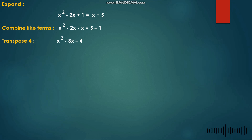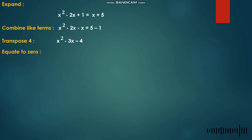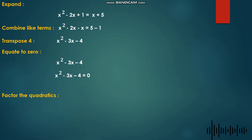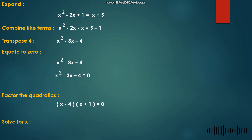Combining further: negative 2x minus x gives negative 3x, and 5 minus 1 gives 4. Transposing 4 makes it negative 4, so we equate to zero: x² − 3x − 4 = 0. Factoring the quadratic gives (x − 4)(x + 1) = 0. Solving for x: x = 4 and x = negative 1. Therefore, the correct answer is letter C.